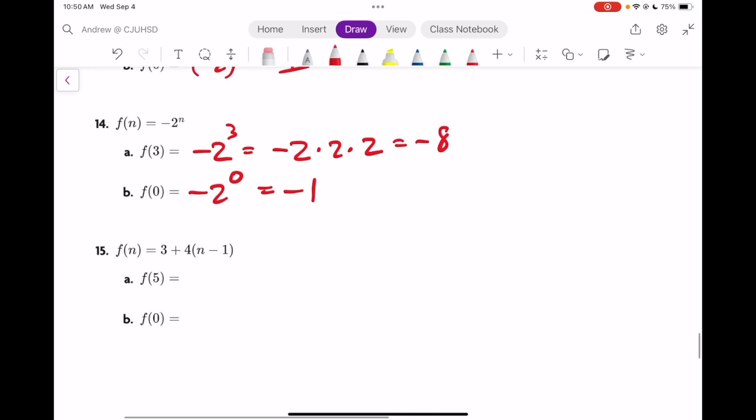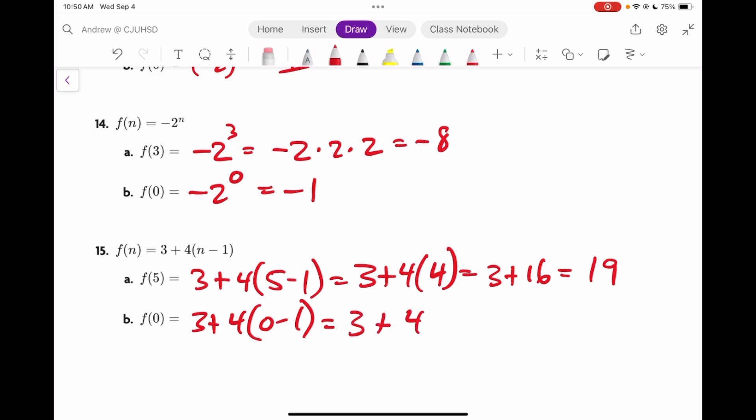And finally f(5), 3 plus 4 times 5 minus 1. That's 3 plus 4 times 4, 3 plus 16, or 19 is our answer. And f(0) is 3 plus 4 times 0 minus 1, or 3 plus 4 times negative 1. That's 3 minus 4, that's negative 1. This is the end of the Ready, Set, Go. See you in Lesson 7.